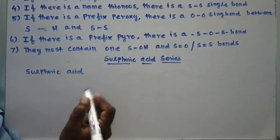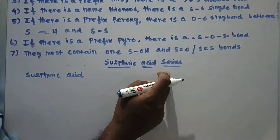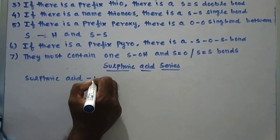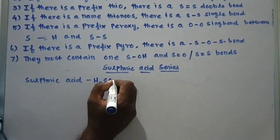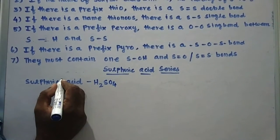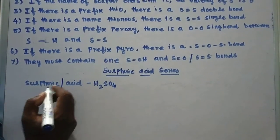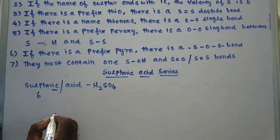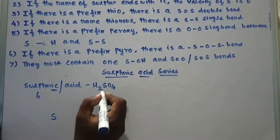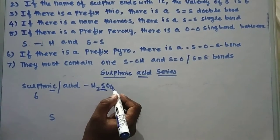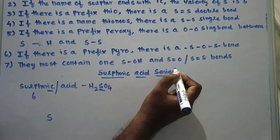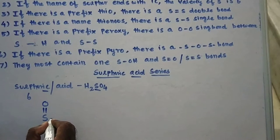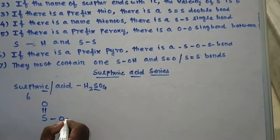Now we are going to discuss the sulfuric acid series. First, sulfuric acid has the formula H₂SO₄. The name sulfuric ends with -IC, so the valency of sulfur is 6. Sulfur acts as the central atom. There must be an S=O bond, another S=O bond, and an S–OH bond.